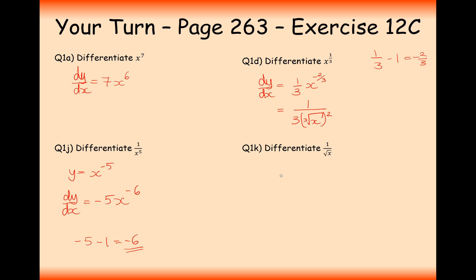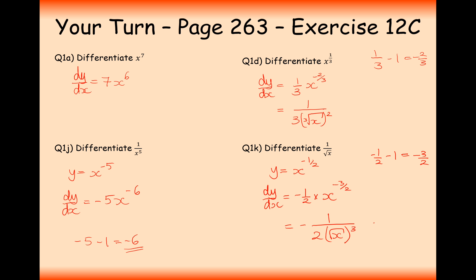Differentiating 1 over the square root of x: first rewrite this as x to the power of minus 1/2. Then multiply minus 1/2 to the front, giving minus 1/2, and reduce the power by 1: minus 1/2 take away 1 gives minus 3/2. So it's minus (1/2)x to the minus 3/2. Writing this as a fraction: it's 1 over 2, with x to the 3/2 on the bottom — that is, the square root of x cubed — so minus 1 over 2 times the square root of x cubed.